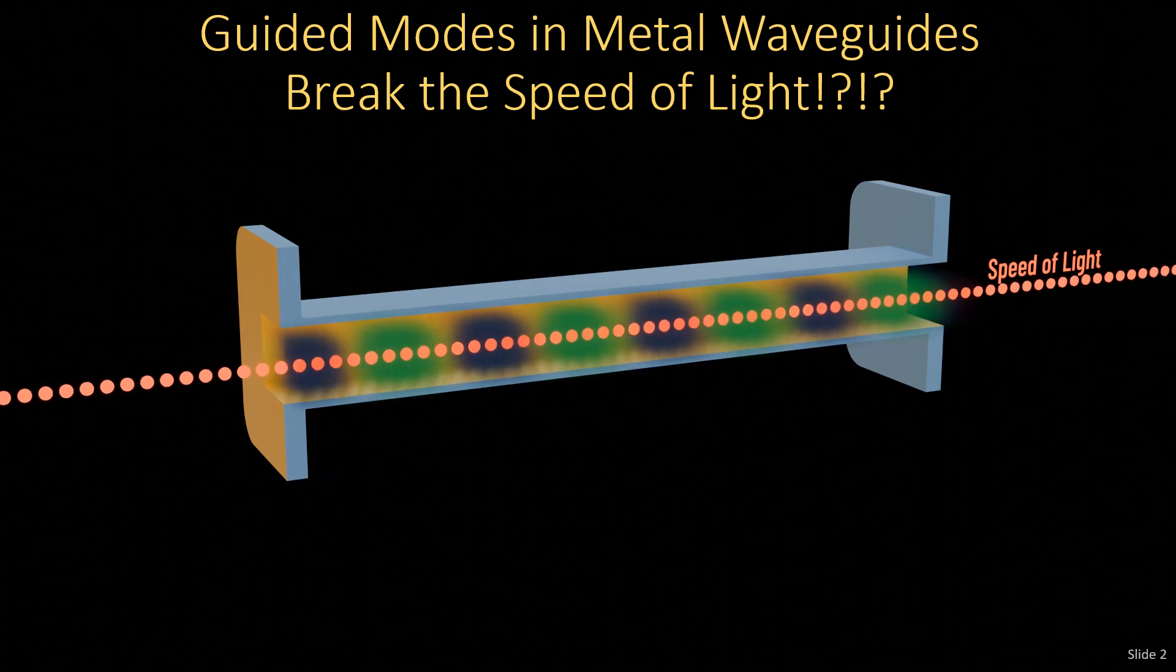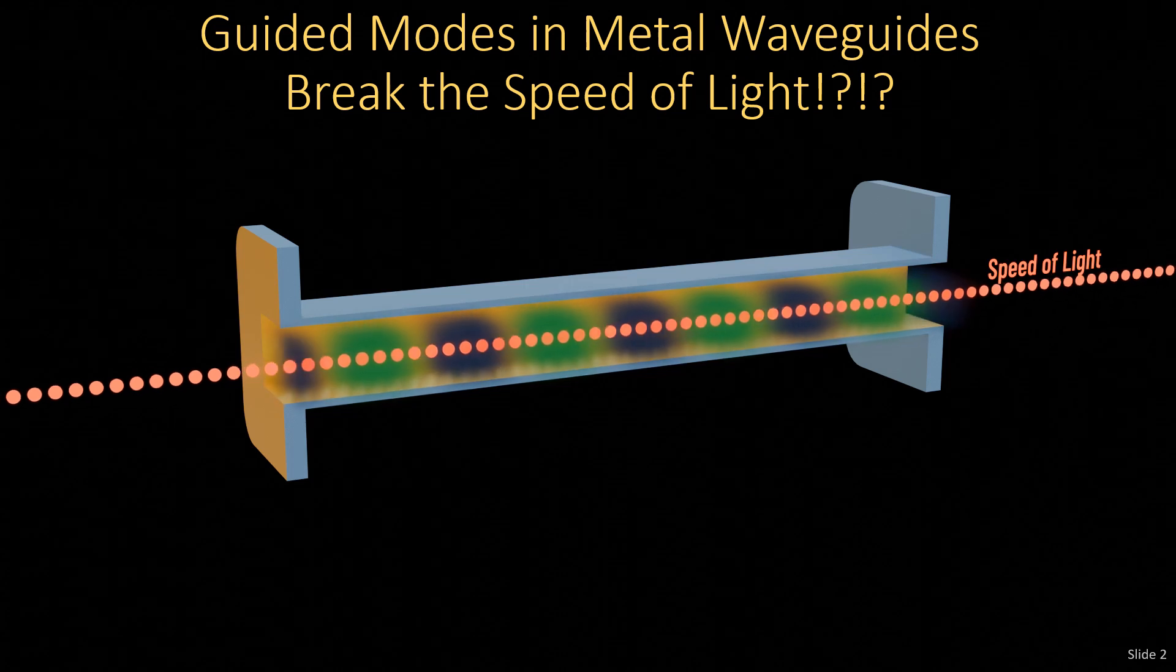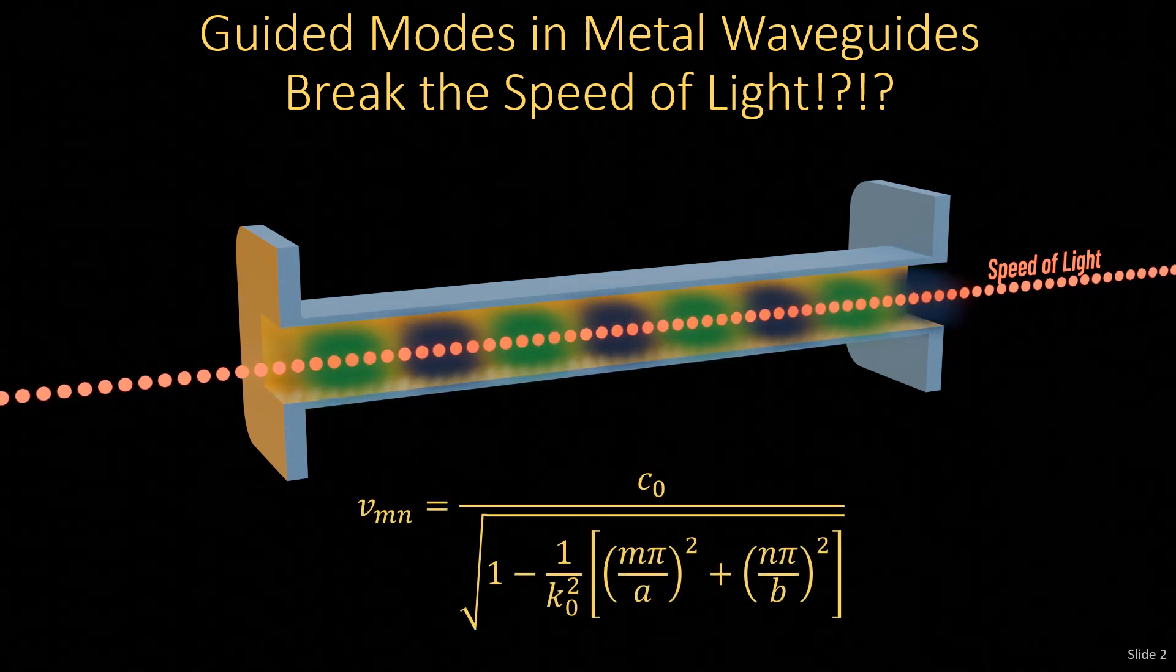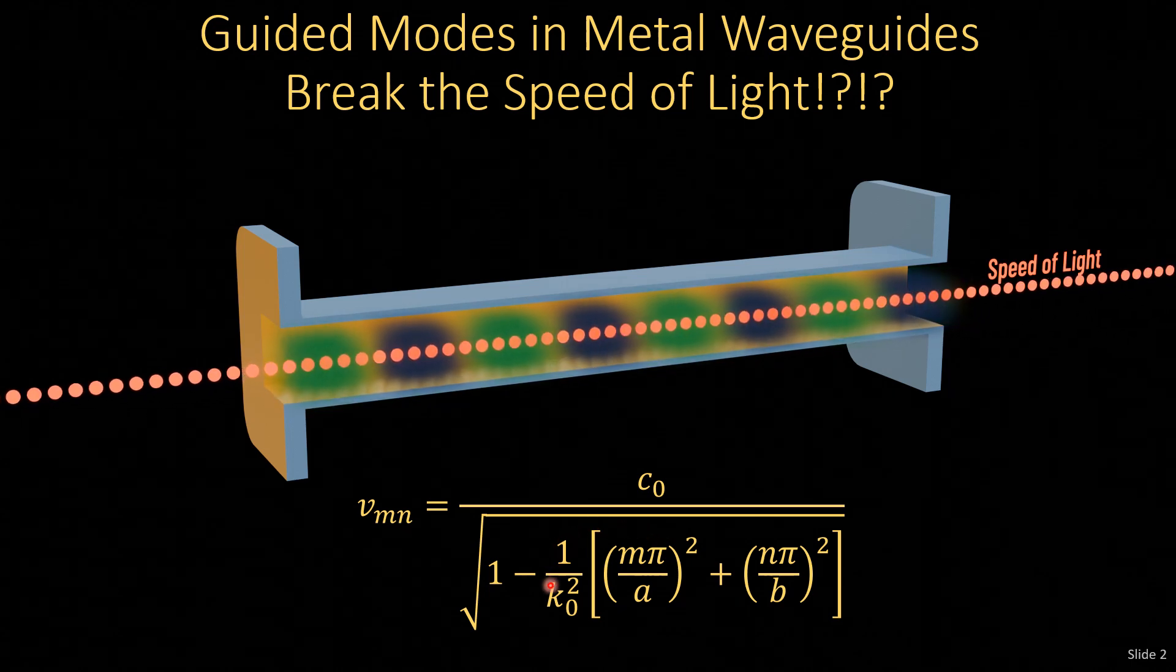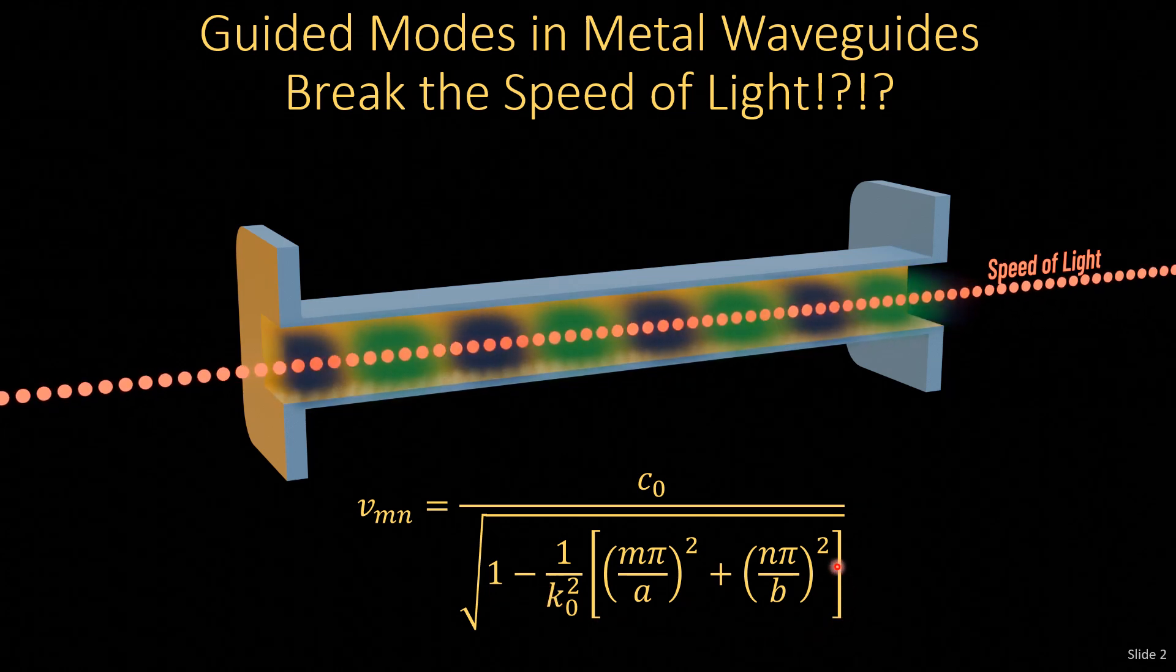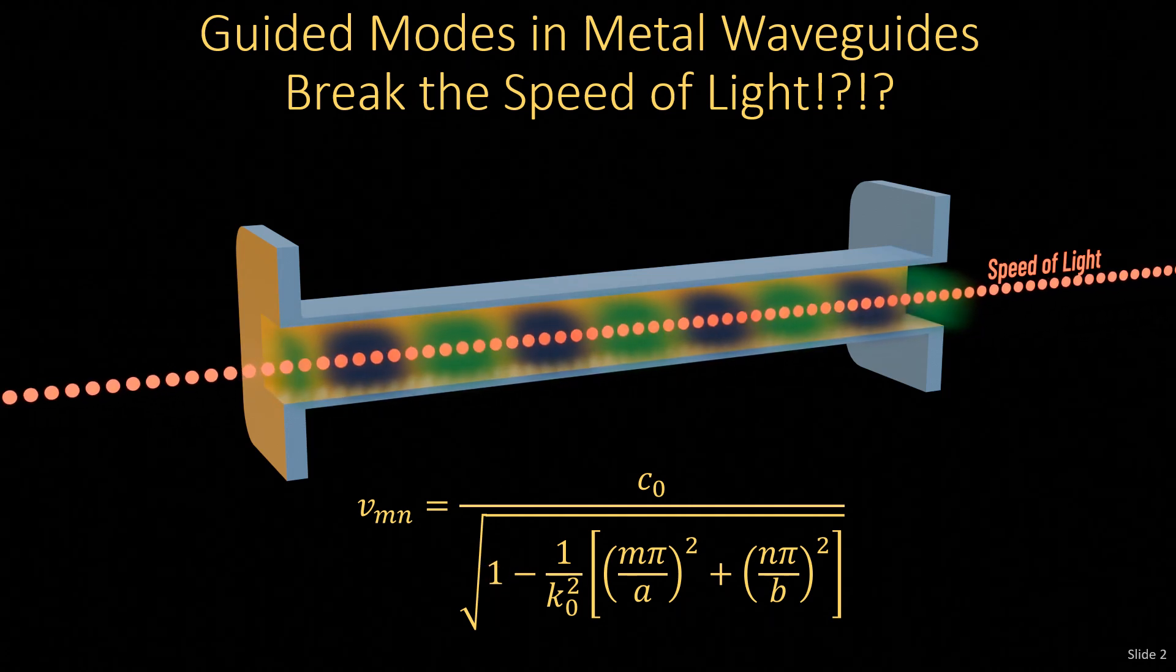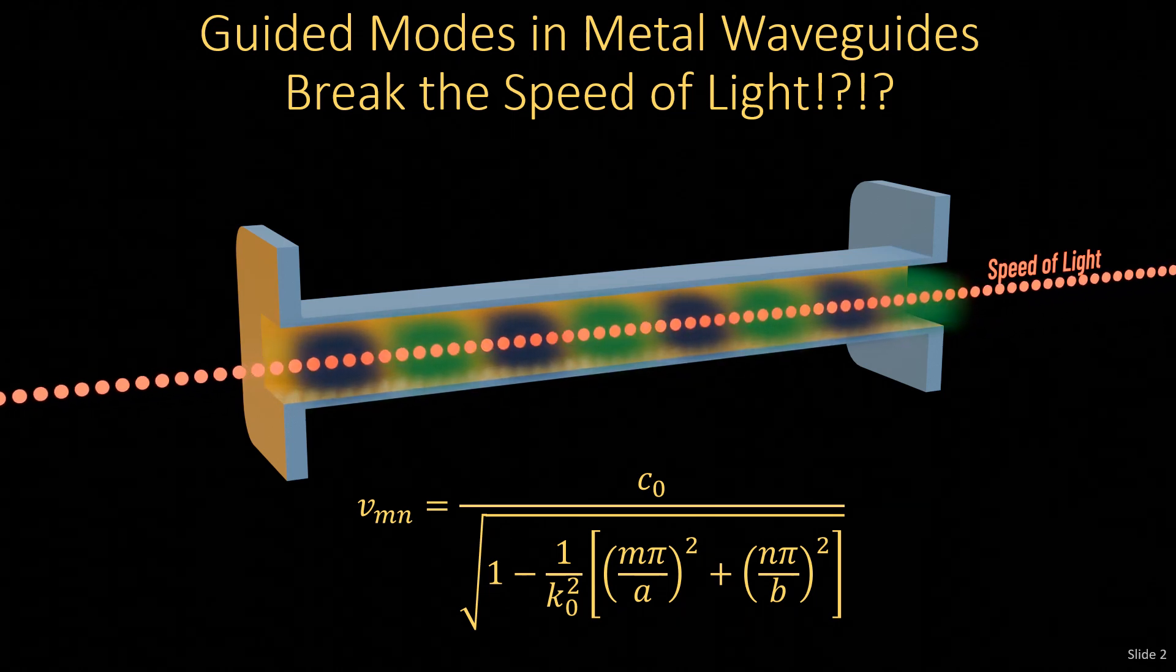And I learned we identify discrete modes in these metal waveguides with integers M and N. So you'll have these TE_MN modes or TM_MN modes, and we eventually derived an equation for the velocity of those modes. So looking at this equation, if we look at these terms around the square brackets, these are all positive numbers. So this whole group of terms that I'm circling right here is a positive number. So we're taking a positive number and subtracting that from one. So what's inside the square root then, if it's a valid guided mode, is something less than one.